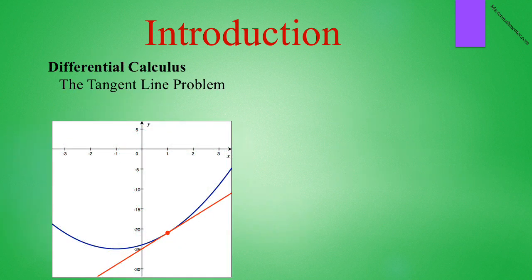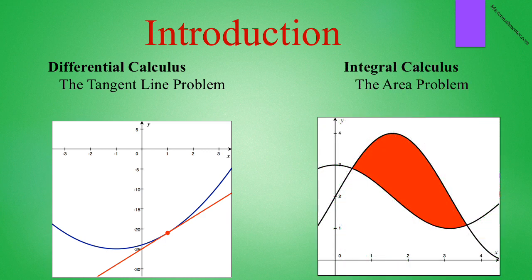Differential calculus is concerned with one problem only called the tangent line problem. If you are given a curve, as we see in blue, you want to find the equation of the tangent line, as we see in red. Integral calculus is concerned with only one problem called the area problem. Given two curves, we want to find the area between them. So on the indicated graph, we have two very different looking curves. We want to find the area of the red region.